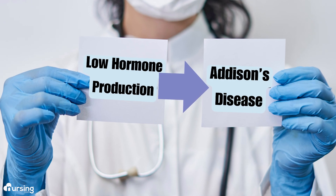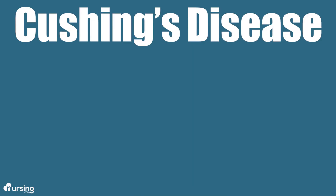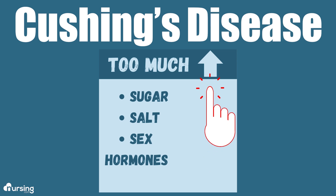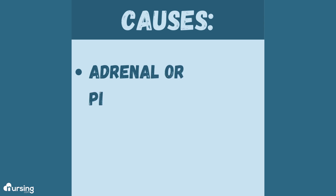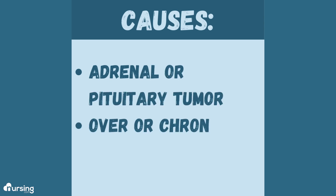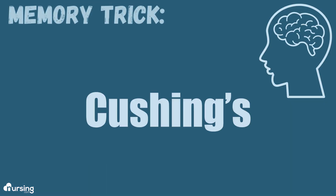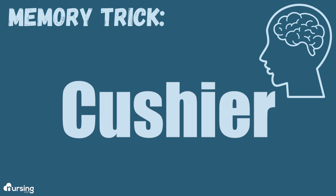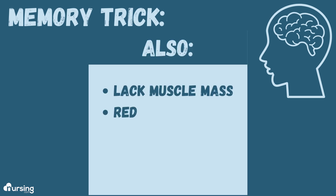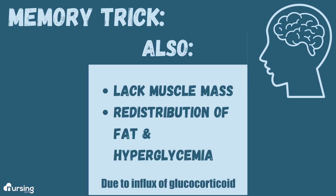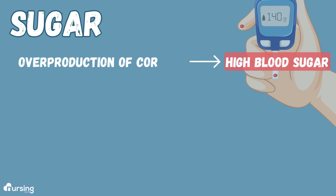Unlike low hormone production in Addison's disease, with Cushing's disease there's too much sugar, salt, and sex hormones, and that manifests in the symptoms these patients experience. With Cushing's, it's usually caused by an adrenal or pituitary tumor or the overuse or chronic use of corticosteroids. You can remember Cushing's because things are a little bit cushier. Patients tend to lack muscle mass and have redistribution of fat, as well as hyperglycemia because of the influx of glucocorticoid — that's the sugar part — as overproduction of cortisol leads to increased blood sugar.